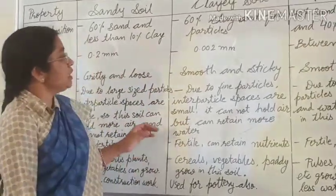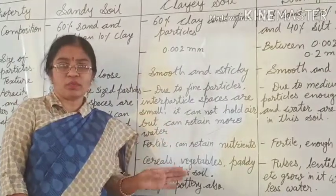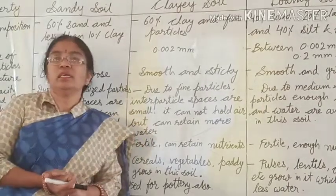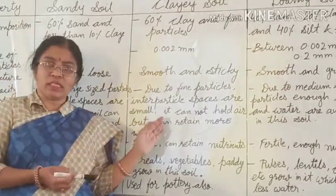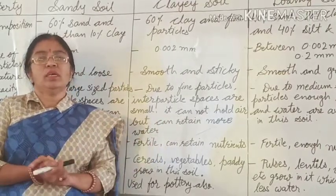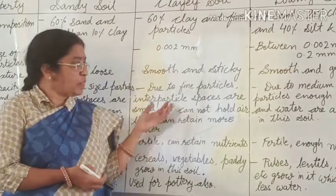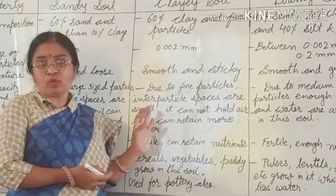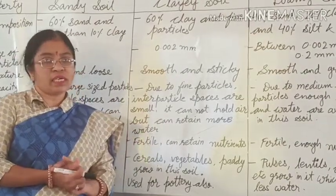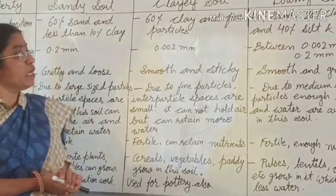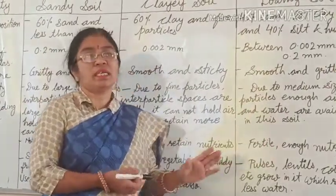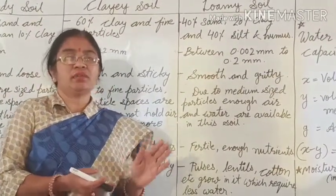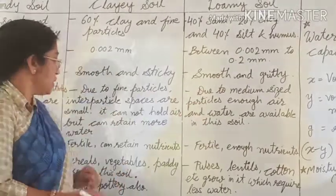In clay soil, the particles are very fine and inter-particle space is very less, so less air is found between the clay particles. Plants growing in such soil will not obtain proper oxygen for their roots. However, the water logging capacity of clay soil is more — it can retain more water. In loamy soil, as there are medium-size particles, both air and water are available in enough quantity, and that's why it is best suited to plants.